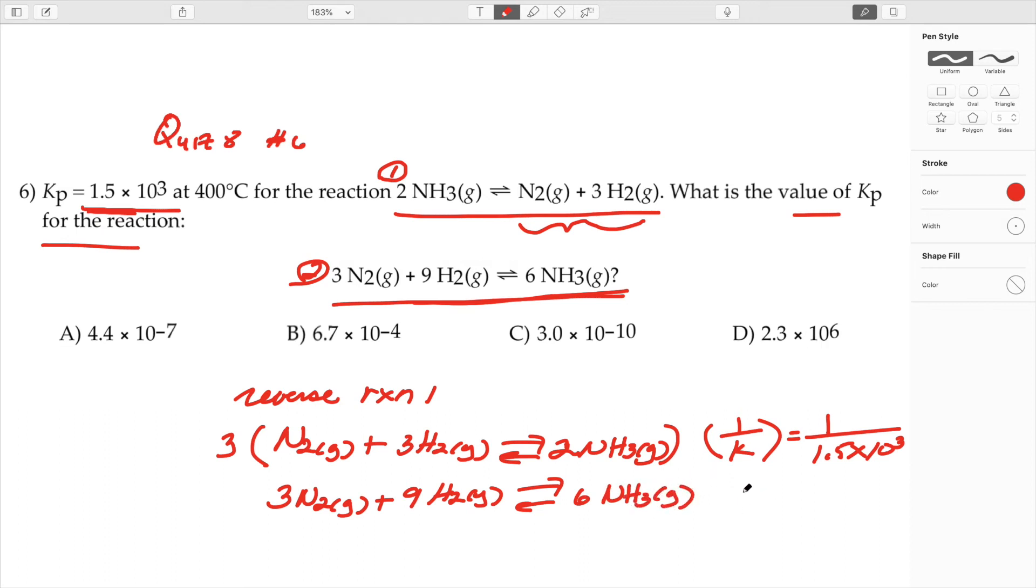What I need to do then is take my 1 over K and remember if I multiply the coefficients in the equation by 3 then I need to put this to the third power.